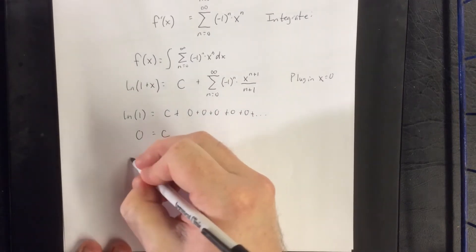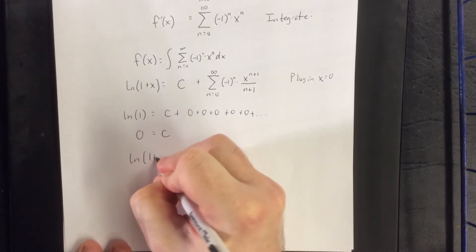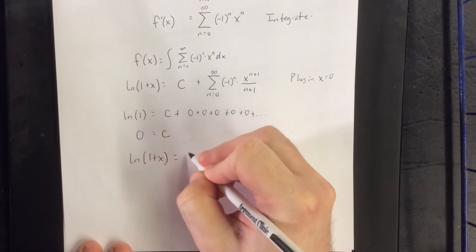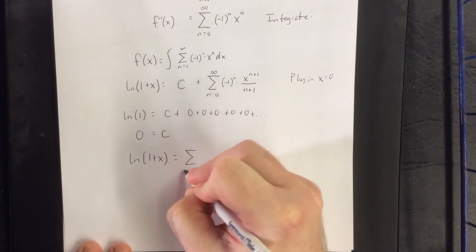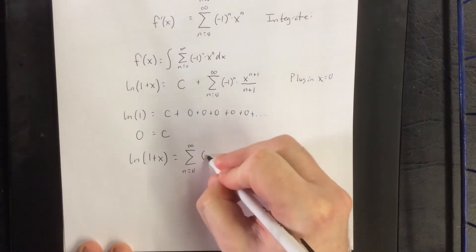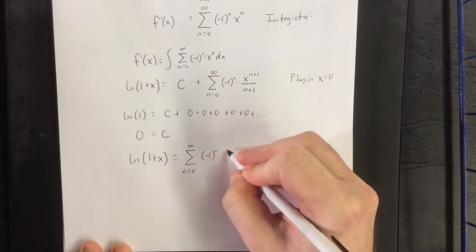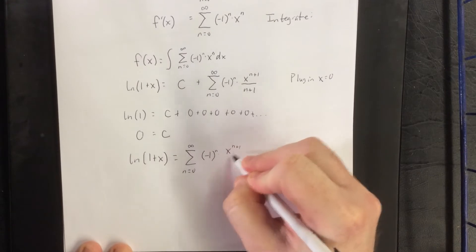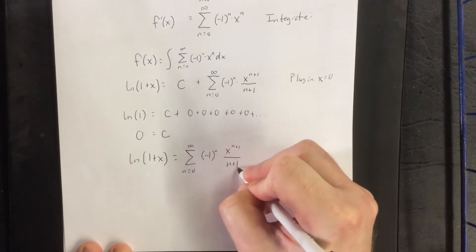So the power series representation of the natural log of 1 plus x will be the following. This will be the sum from n equals 0 to infinity of negative 1 raised to the nth power times x to the n plus 1 power over n plus 1.